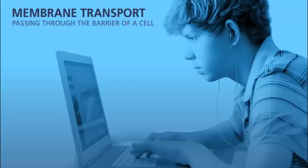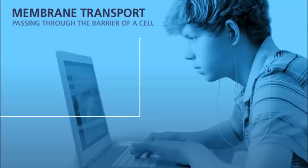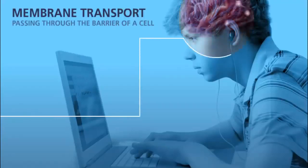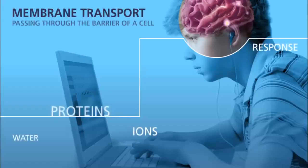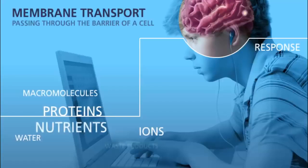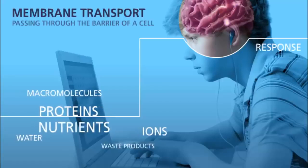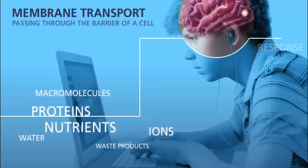Part of metabolic activity is the ability to move materials into and out of cells. This is important in cell communication and normal cell function. For example, in order for the cells of your nervous system to function properly, ions, water, proteins, and other molecules need to be able to pass into and out of cells.